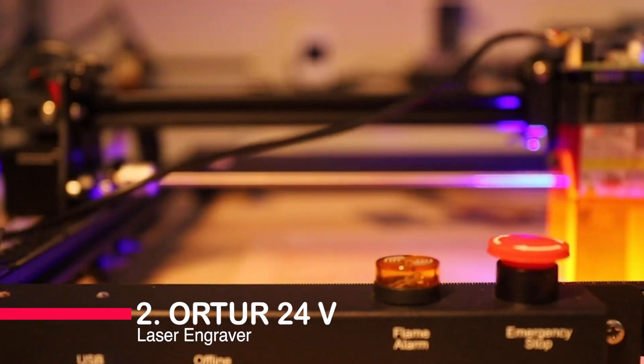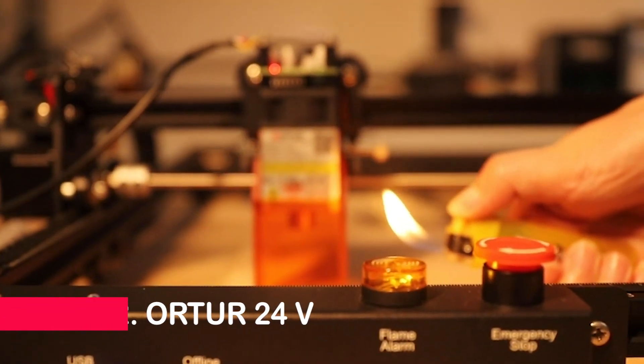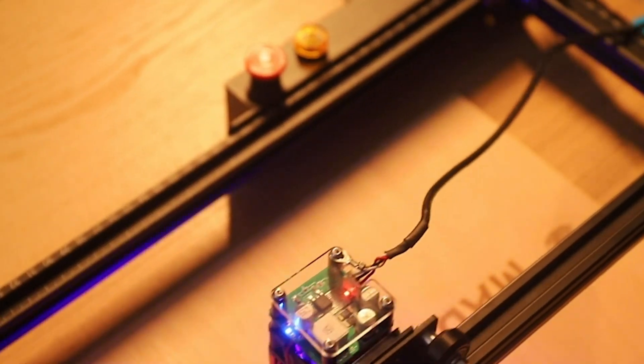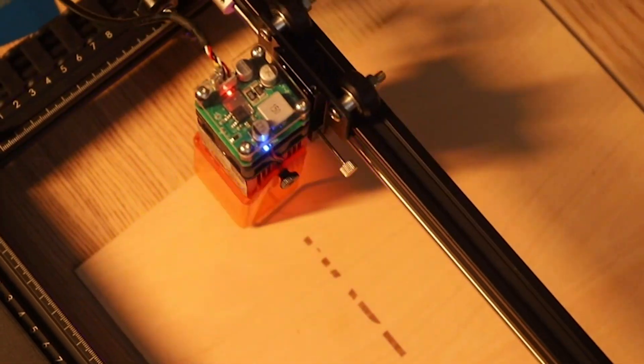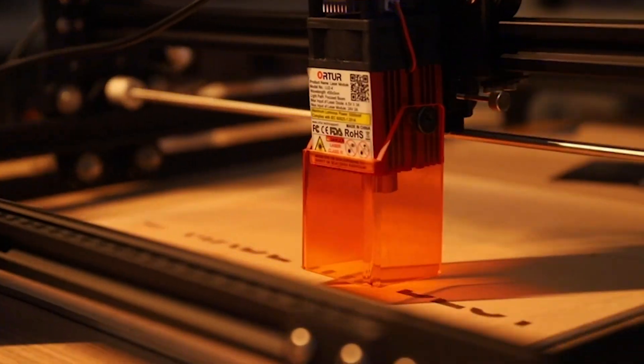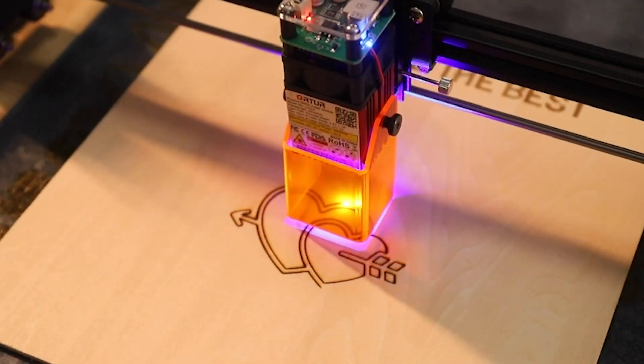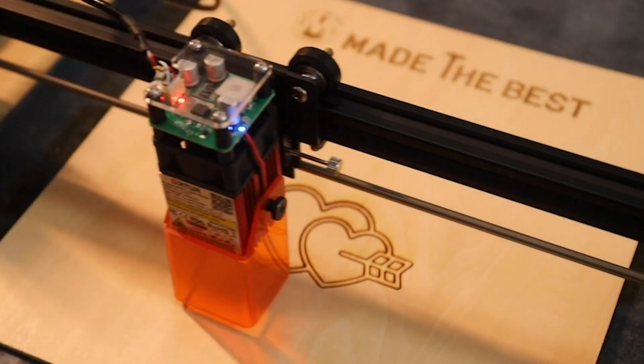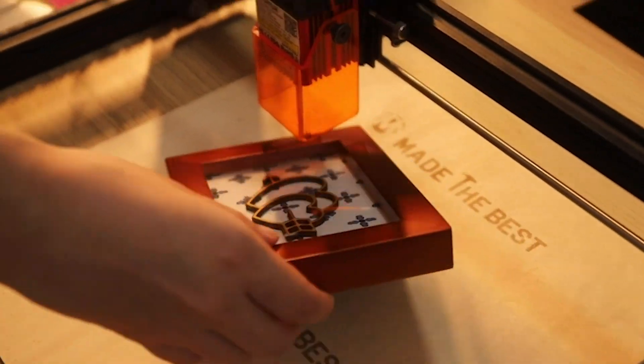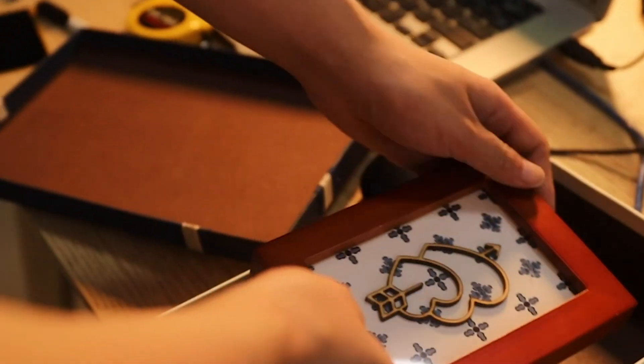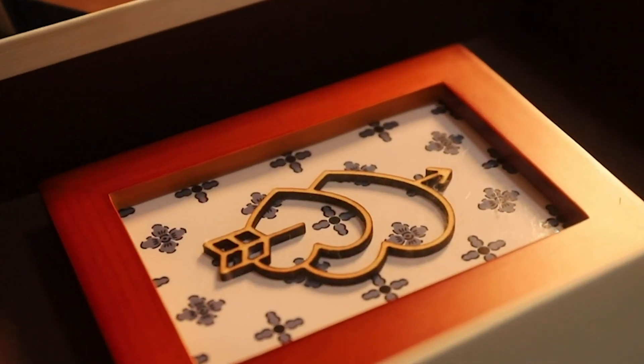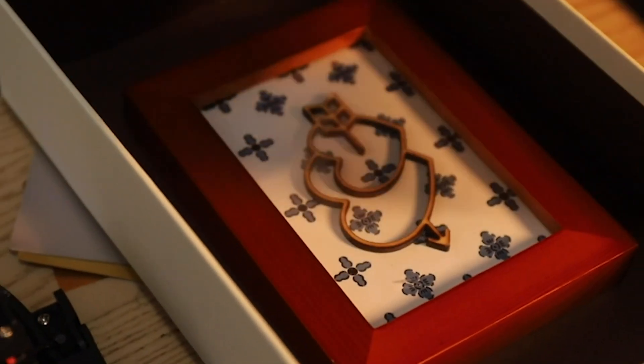Number two, Order 24 Volts Laser Engraver. The Order 24 Volts Laser Engraver 2 Pro S2LF. This powerful laser machine boasts a 5.5-watt output, making it ideal for metal and woodwork. Thanks to optimized Order Laser 1.8 firmware, it can cut through 4-millimeter plywood and 10-millimeter pine boards effortlessly. Safety-wise, it's equipped with five protective features, ensuring peace of mind while you work.